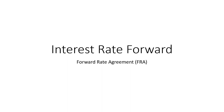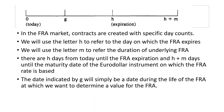To understand the FRA, we need to always understand this timeline. The FRA contract starts from today, which we call zero, and has a duration of M. The underlying contract is based on some duration of the loan, termed as M, and it expires in period H. So this whole contract is based on H plus M days.